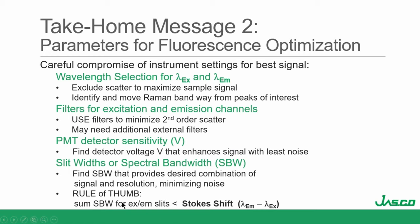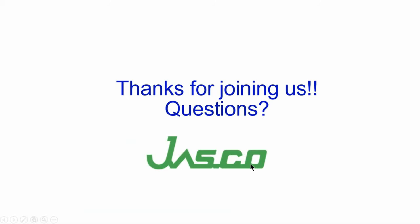One final rule of thumb: the sum of the spectral bandwidth for excitation and emission should be less than the Stokes shift of the molecule you're looking at — that'll help you minimize scattered excitation light in your emission as well. Thank you for joining us. We're happy to take any questions, and I hope you find this a valuable resource for your future fluorescence experiments.